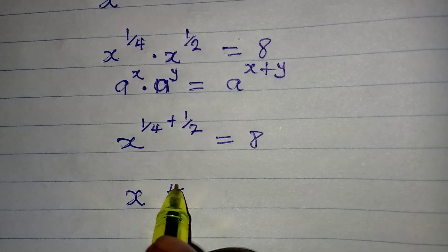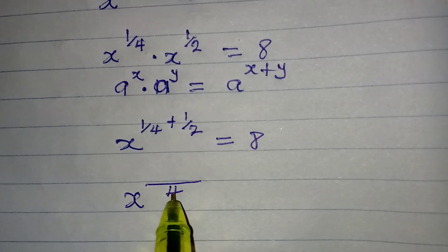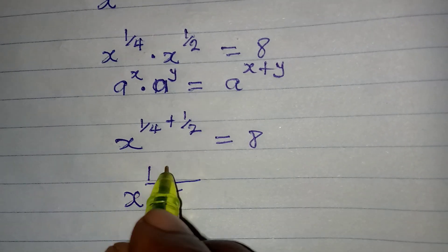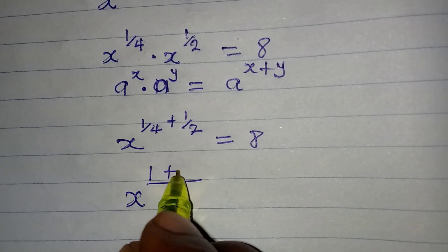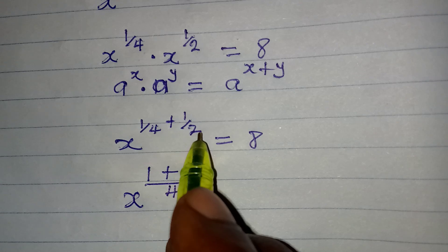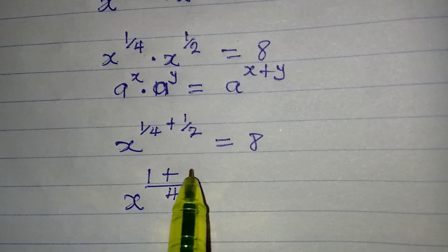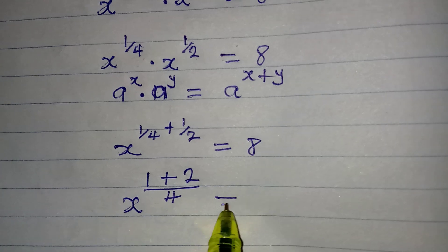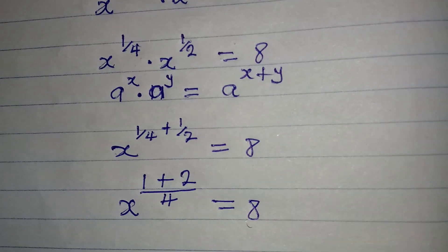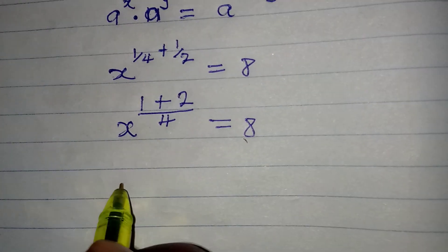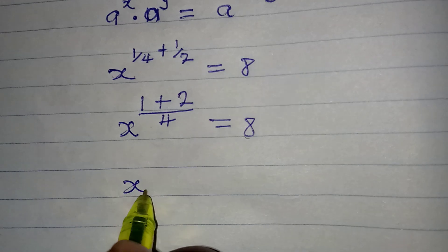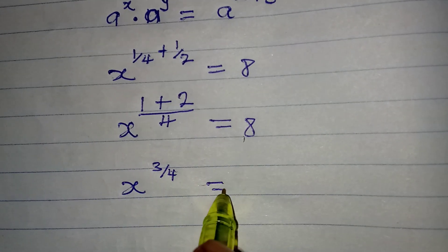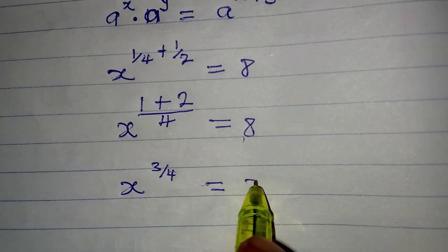The LCM of the denominators is four. Four divided by four is one, times one is one; four divided by two is two, times one is two. So one plus two over four gives us three over four. This means we have x to the power of three over four, equal to 8.